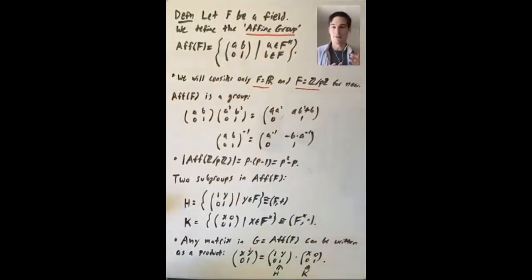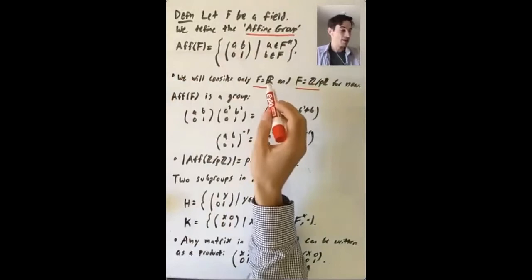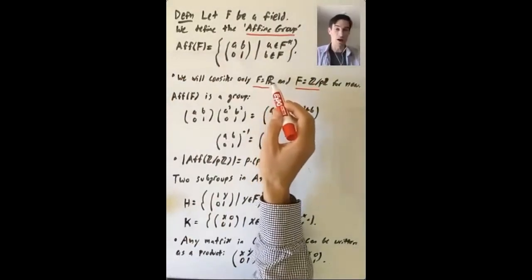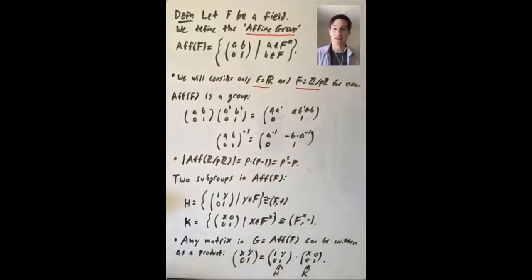We haven't talked about fields in general, but for now it's okay to just think about the cases where F equals ℝ and where F equals ℤ mod pℤ. The important thing is that in a field, we have both a way to add elements and a way to multiply elements, and every non-zero element has an inverse in F.